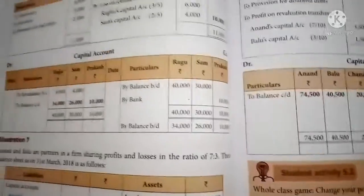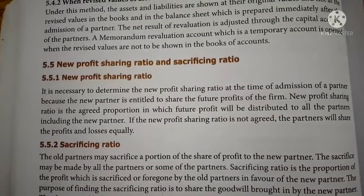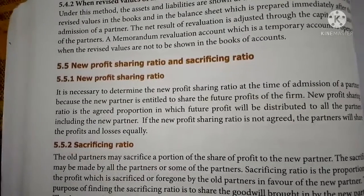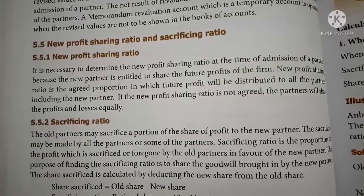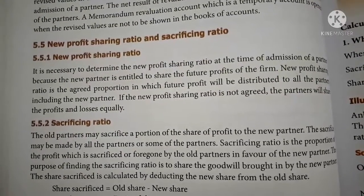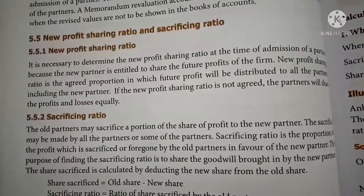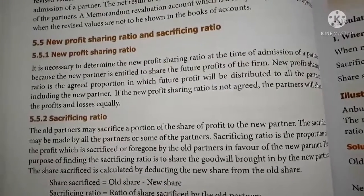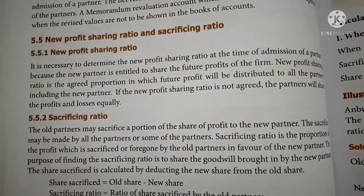Next, calculation of new profit sharing ratio. At the time of admission of a new partner, the old partners will sacrifice some part of their profit share in favor of the incoming partner. So they should find out a new profit sharing ratio and sacrificing ratio. It is necessary to determine the new profit sharing ratio at the time of admission because the new partner is entitled to share the future profit of the firm. The new profit sharing ratio is the agreed proportion in which future profits will be distributed to all the partners including the new partner.